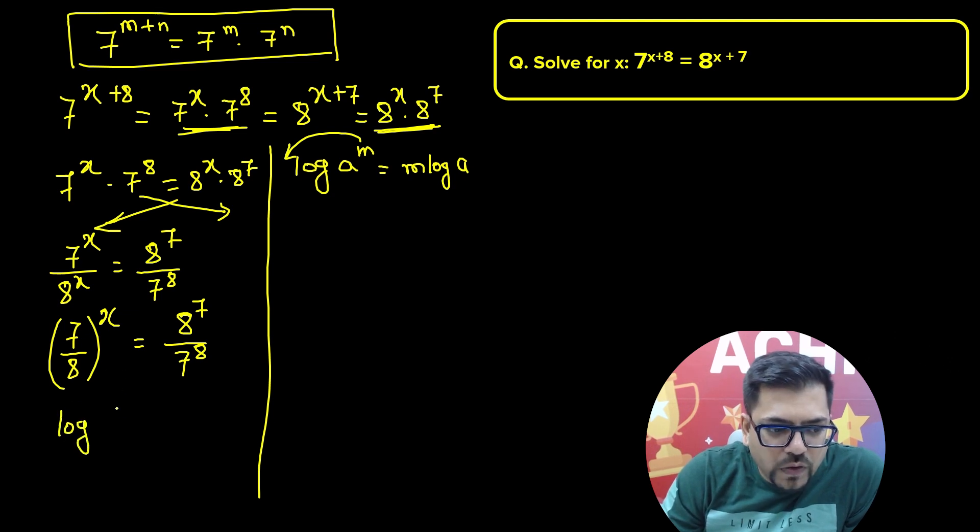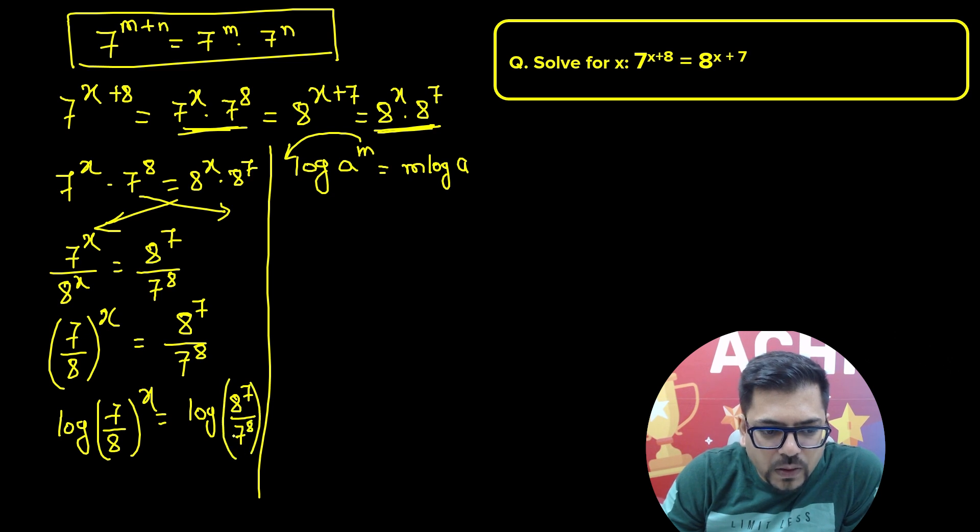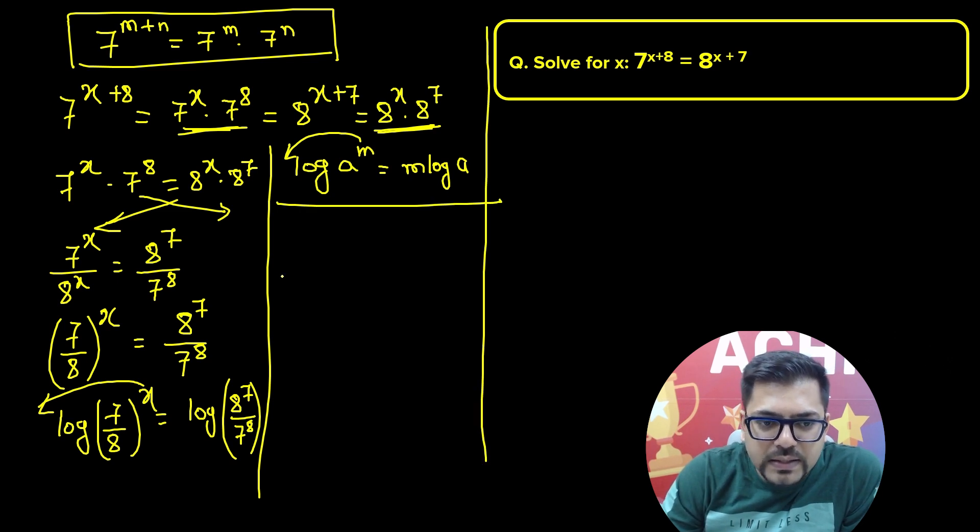I'll write log of 7 by 8 whole raised to power x equals log of 8 raised to power 7 divided by 7 raised to power 8. Using this property, x will come to this side. We'll have x times log 7 by 8 equals log of 8 raised to power 7 divided by 7 raised to power 8.